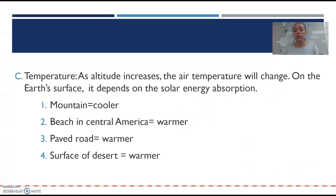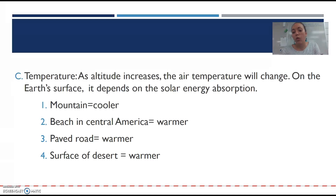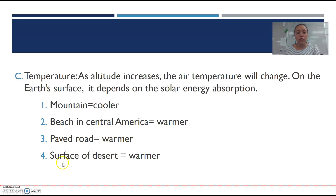Temperature is different depending on the different atmospheric layers. As altitude increases, the air temperature will change differently in each one. On the Earth's surface, it depends on solar energy absorption. For instance, we live closer to the water, so in Florida it may be warmer by us than in central Florida because the water helps absorb sun rays, and in the winter it keeps it warm. In the mountains it might be cooler. A beach in central America would be warmer because it's got water. A paved road would be warmer because it conducts energy, and the surface of a desert would be warmer.